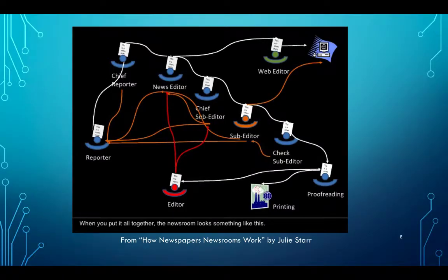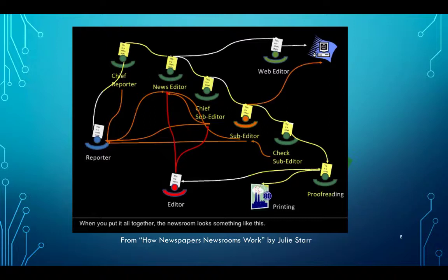In this infographic, we have the links between the different roles, and as you can see, it is not a linear process — all the different roles are active throughout the day. When the reporter does his or her job and writes copy, it is fed to the chief reporter, who coordinates the day's work. Then it goes to the news editor, who has a good overview of what is going on throughout the day. Then there is the chief sub-editor, who coordinates all sub-editing. The check sub-editor — a minor role — does a second checking.